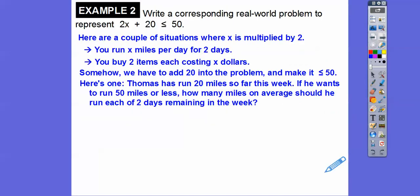So something, here's a couple of situations. So here's one. Thomas has ran 20 miles so far this week. If he wants to run 50 miles or less, how many miles on average should he run in the next two days to meet his weekly goals? So here's his 20 miles that he already ran, and he has two days to run something to make it less than or equal to 50. So that's why it says to run 50 miles or less. So we're including the 50 right here. Let's do the money card right here.